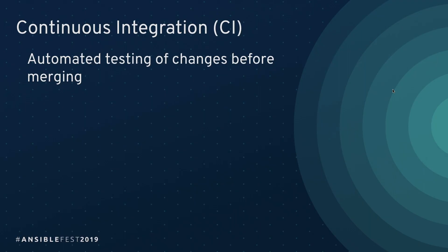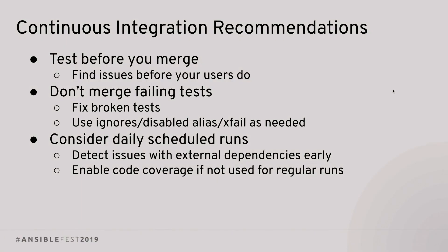Continuous integration — I hope all of you are using it. The key thing is: test before you merge. Some people have the idea that you run the tests, ignore the results, and merge anyway — please don't do that. You have ansible-test — use it. Whether it's just for sanity tests or sanity, integration, and unit tests — run the tests and act on the results. If your tests aren't passing, fix those issues. If you can't fix them, take advantage of the ignores, the disabled alias, and the xfail marker. Try to keep track of those things, use an issue tracker if needed, and review your ignore list periodically. Don't just let your tests rot.